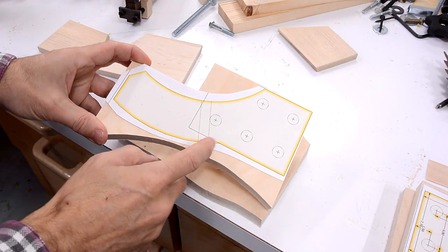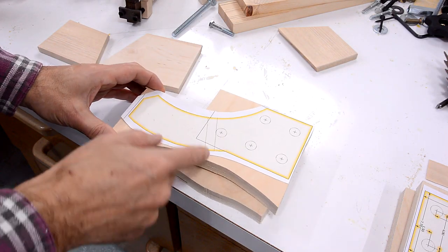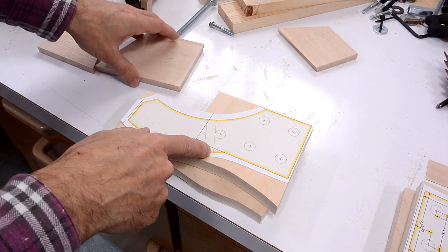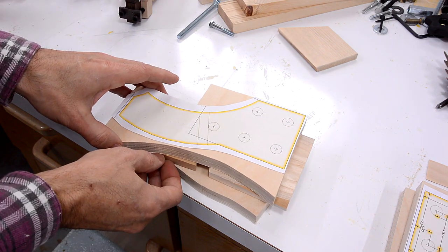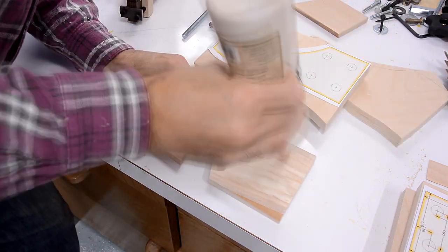These trunnions are gonna consist of two layers of Baltic Birch plywood, and between I need a layer with a hole in it, so I'm gonna glue these pieces in between to form that hole, and I'll do that one layer at a time.